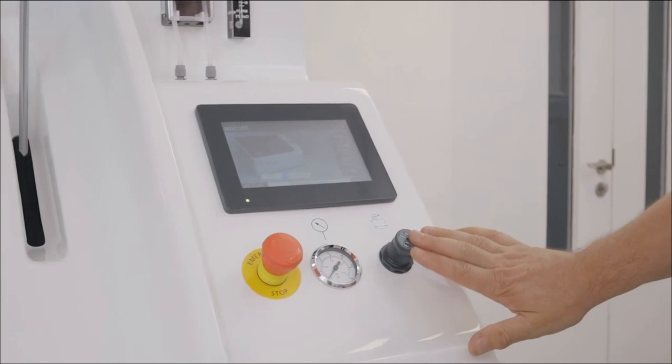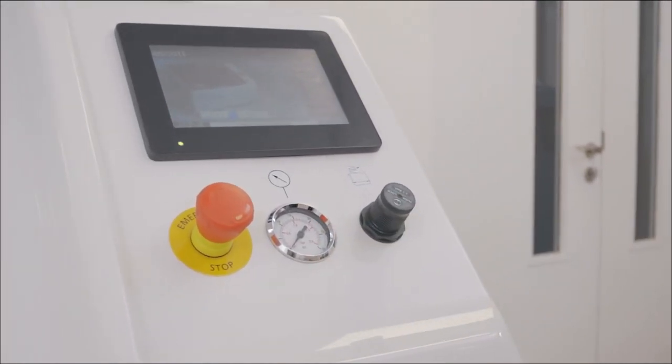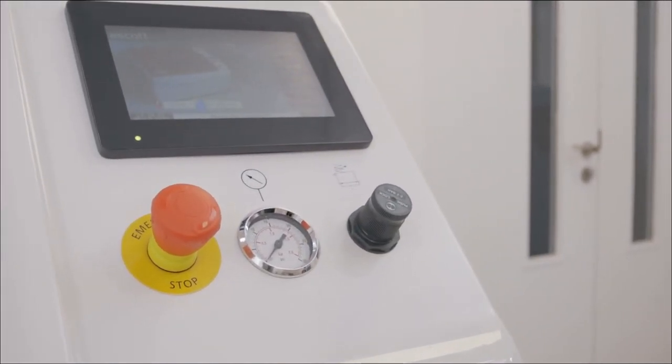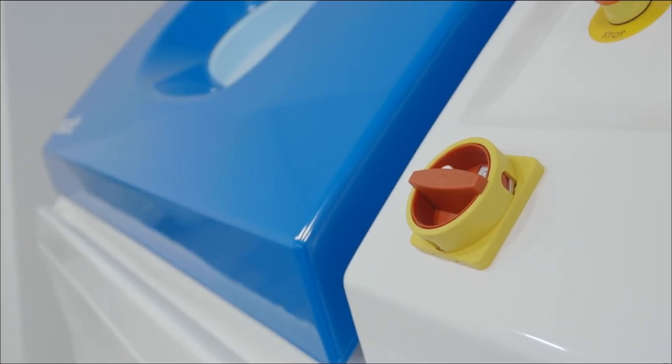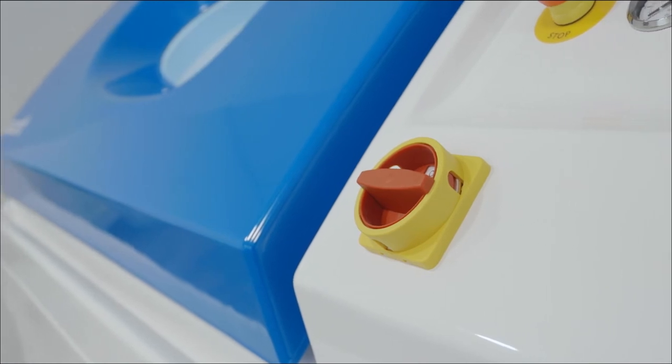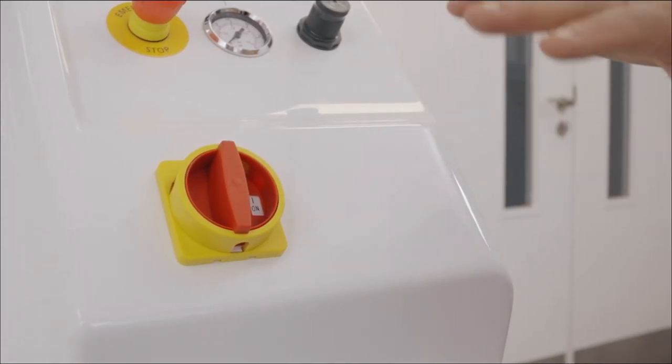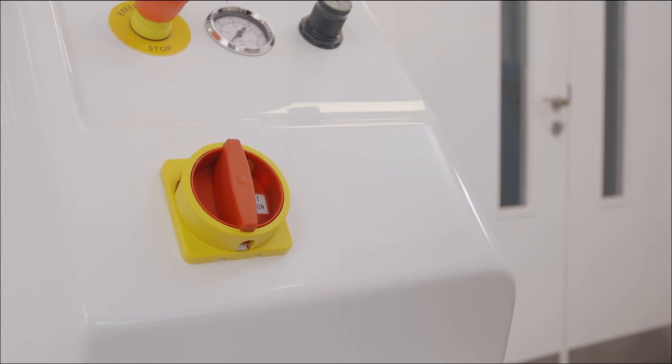We have a regulator and gauge for controlling the air pressure during salt spray testing. Below these we have the mains isolator which can be used to cut power completely to the chamber and in the event of a breakdown be locked out for safety.